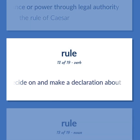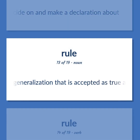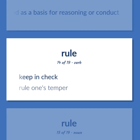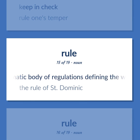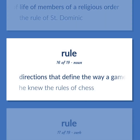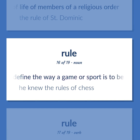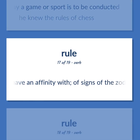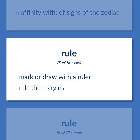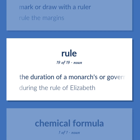Rule: decide on and make a declaration about. A basic generalization that is accepted as true and that can be used as a basis for reasoning or conduct. Keep in check — rule one's temper. Anyone of a systematic body of regulations defining the way of life of members of a religious order — the rule of St. Dominic. Directions that define the way a game or sport is to be conducted — he knew the rules of chess. Have an affinity with, of signs of the zodiac. Mark or draw with a ruler — rule the margins. The duration of a monarch's or government's power — during the rule of Elizabeth.